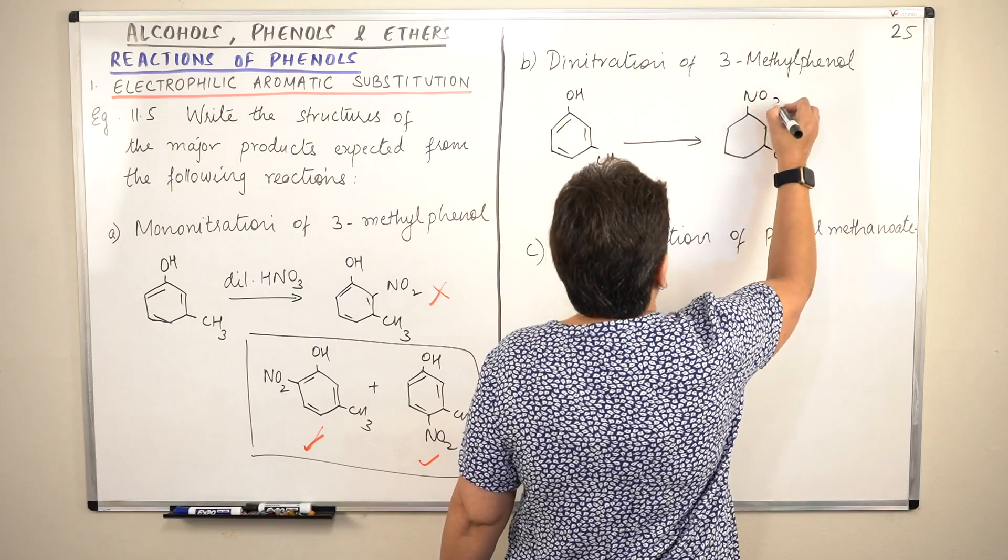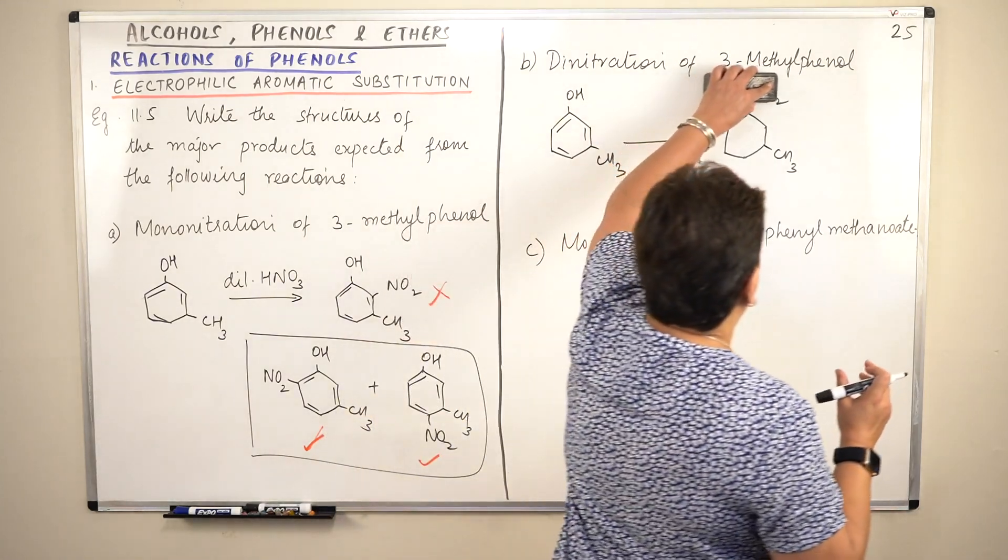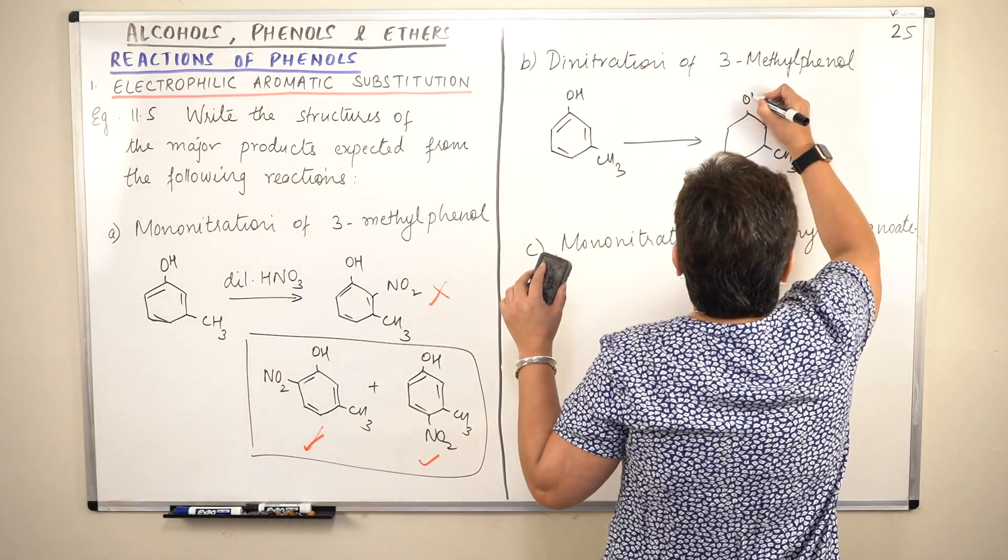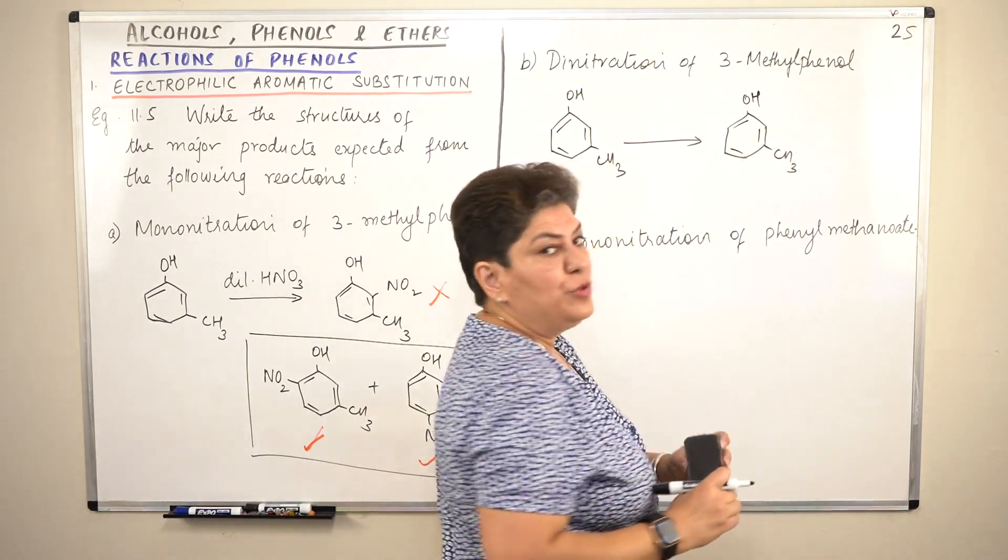This is nitro. And there are two. Oh sorry, this is OH. This is phenol. There are two nitro groups that are coming in. Where do you think the two nitro groups would go?